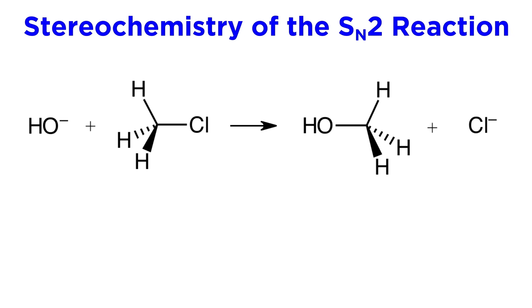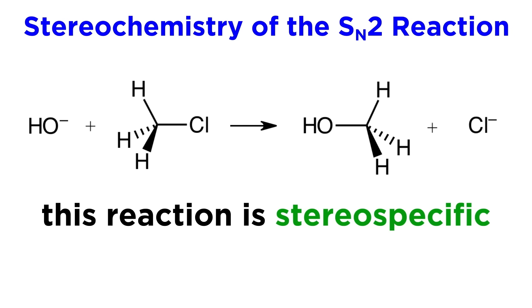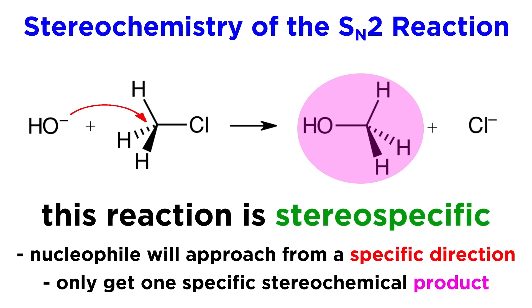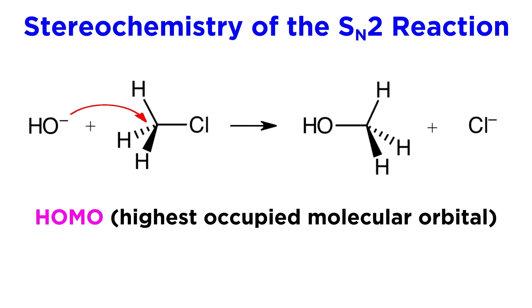There are a few more very important points to mention about the SN2 reaction. The first is that it is stereospecific. This means that the nucleophile will only approach from one specific direction, and we will get just one specific product in terms of the possible stereochemistry.